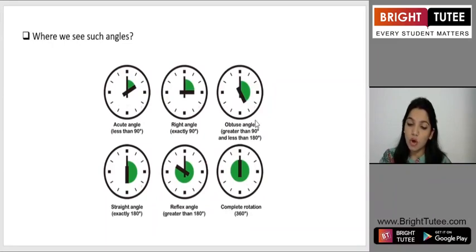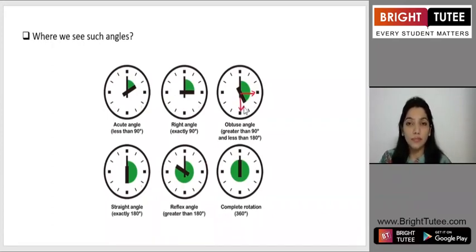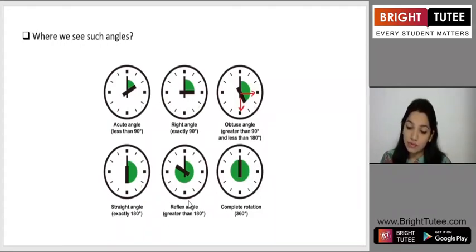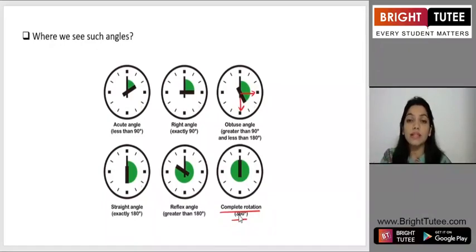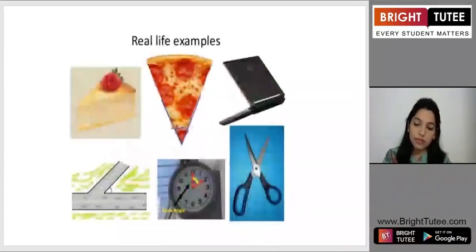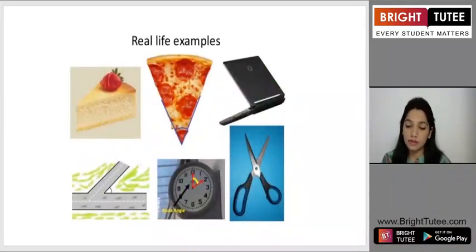Moving to the next clock: it shows an obtuse angle because it is greater than 90 degrees — 90 was at 3 o'clock — but less than 180 degrees, which you see when the clock makes 6 o'clock, forming a straight angle. The next one is a reflex angle, clearly greater than 180 degrees and less than a complete revolution. The last image gives you the complete rotation.